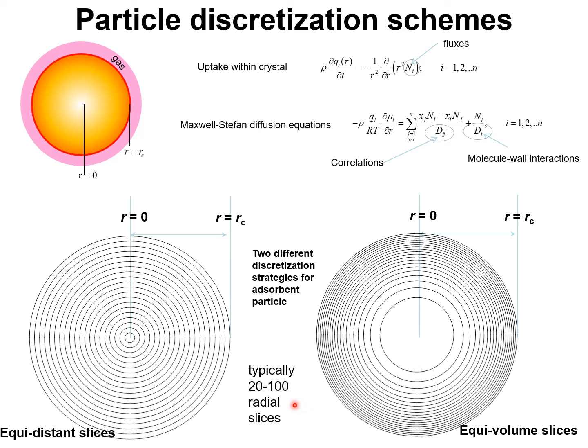In our transient breakthrough simulations, we find that typically using 20 to 100 radial slices is sufficient to obtain good accuracy in the numerical calculations.